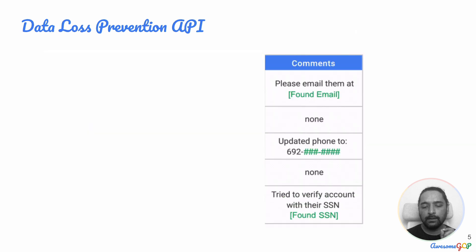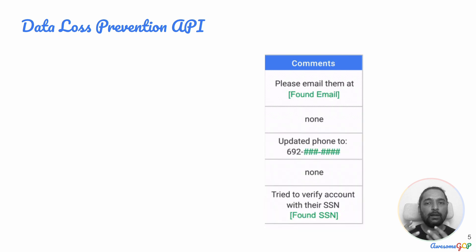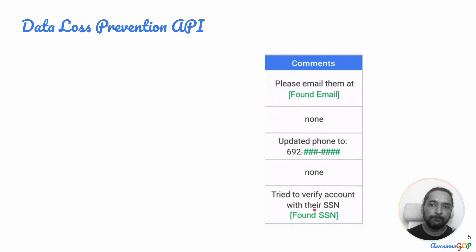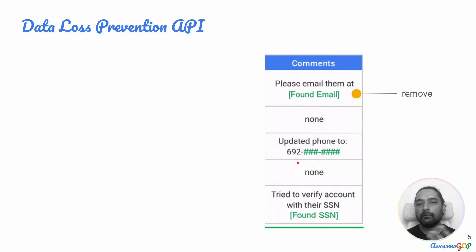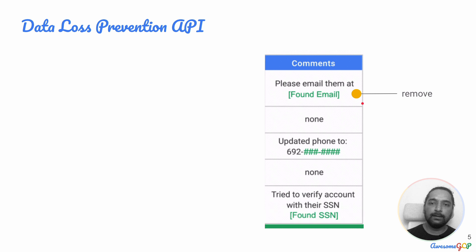When you're talking about removing personally identifiable information, the first product that should come to mind is the DLP API or the Data Loss Prevention API. Let's look at a couple of examples. If we've collected some data — comments that have particular emails, phone numbers, or social security numbers that identify an individual uniquely — what DLP does is remove or redact that personally identifiable information. It found an email and an SSN, and those have been redacted or removed. So this is one way in which the DLP API works.